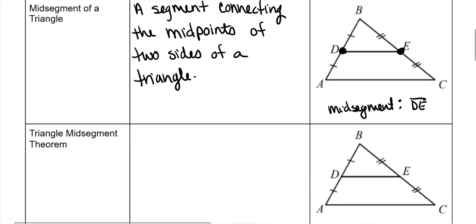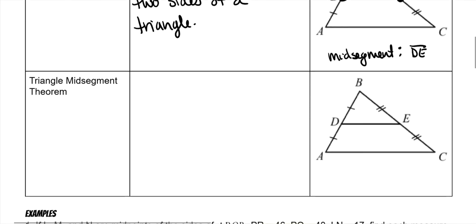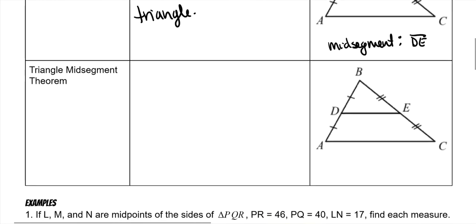The Triangle Mid-Segment Theorem says if a segment joins the midpoints of two sides of a triangle, then the segment is parallel to the third side, and the segment is half as long.